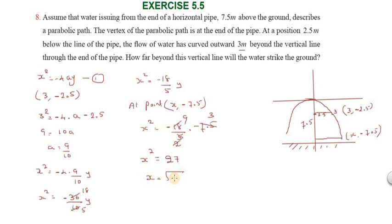x² = 27, so x = √27. x = 3√3 meters. So this is the answer. Thank you so much.